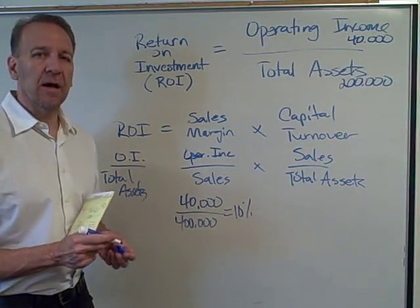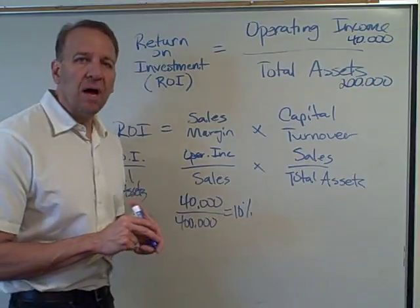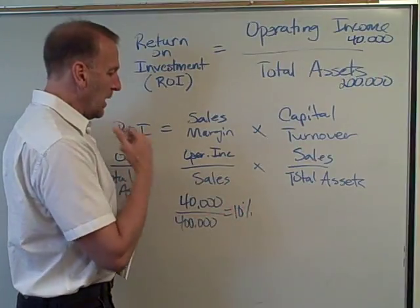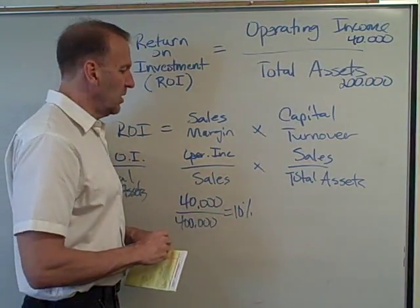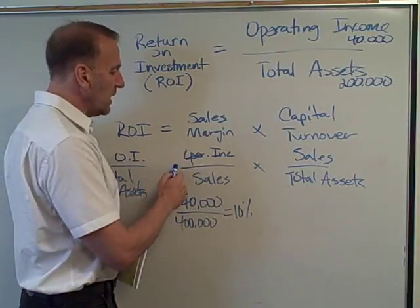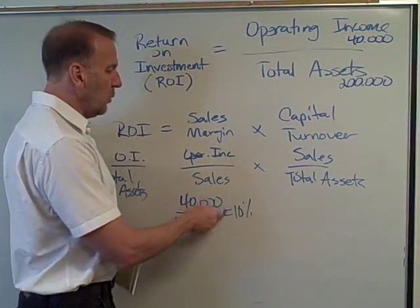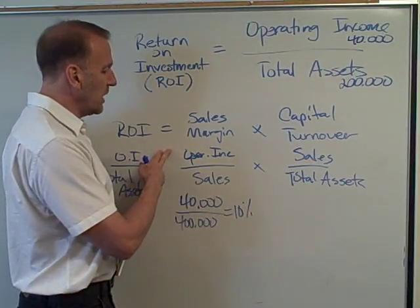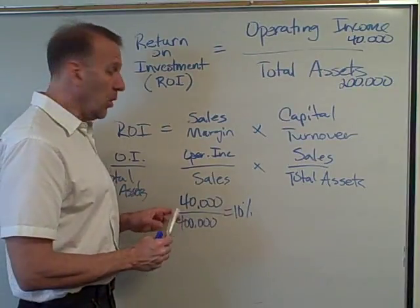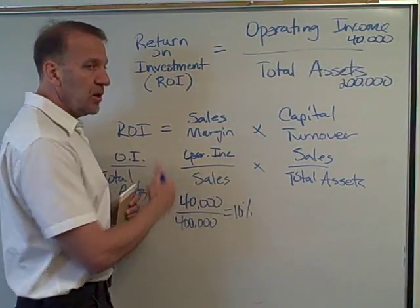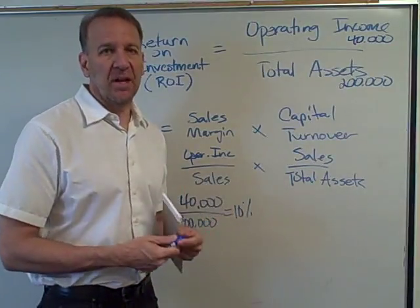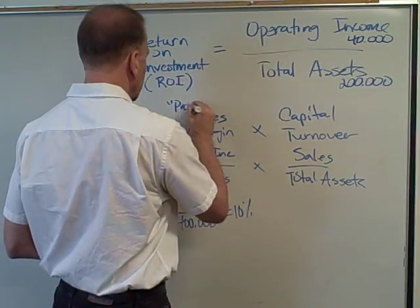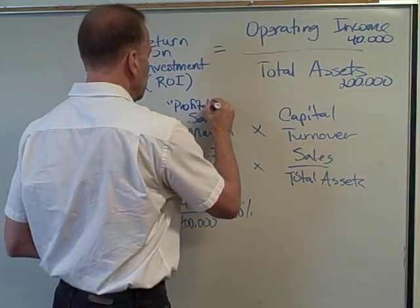The sales margin is looking at the profitability of this investment — how profitable is this investment? Here we're getting a ten percent return from our sales. If we can increase our operating income associated with sales, that will increase profitability. Our goal is to increase operating income while keeping sales consistent, or if sales increase, to grow operating income by a higher percentage. Sales margin measures profitability.